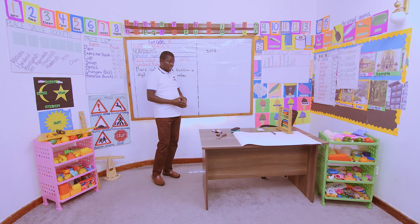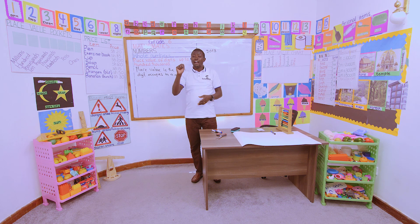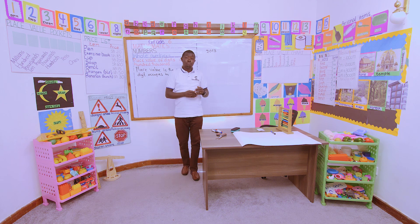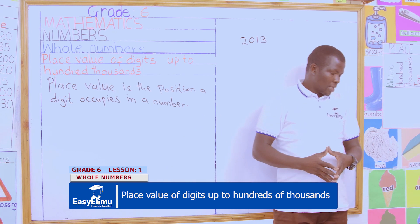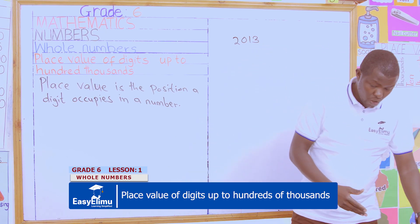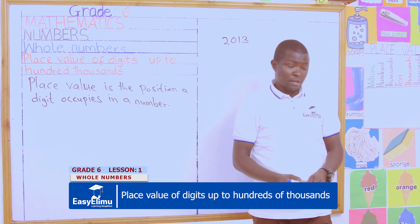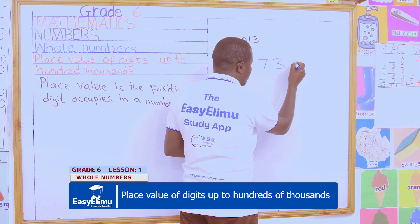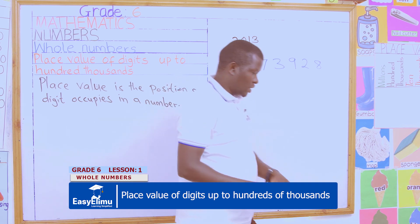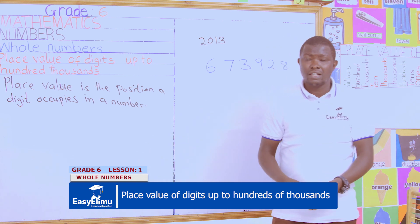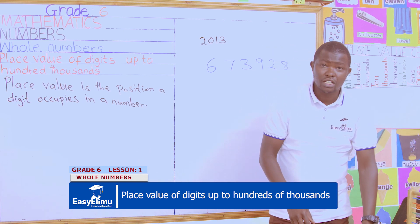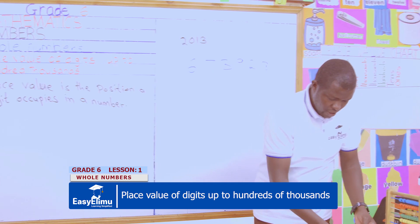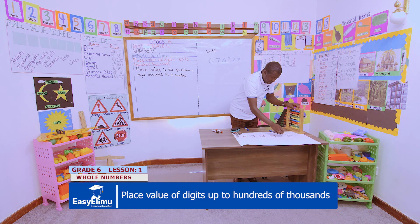Now that we know what place value is, using the pair of scissors and the manila paper — remember in grade 5 you learned a five-digit number, but today we want to go a bit further to six-digit numbers. Write the following digits on your piece of manila paper: six, seven, three, nine, two, and five. Then, using your pair of scissors, cut each digit independently. When you cut, you will have six, seven, three, nine, two, and five — these are our digits.